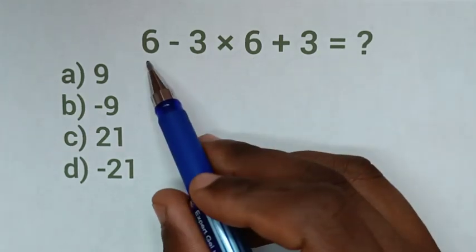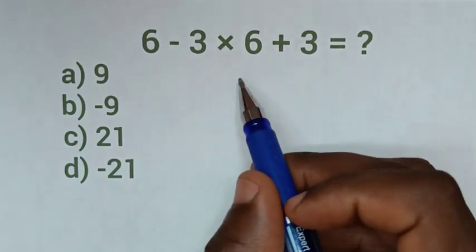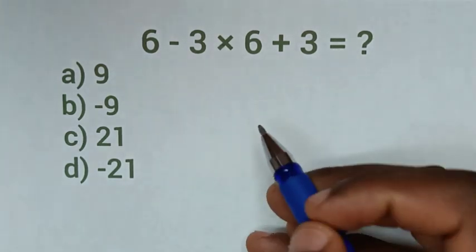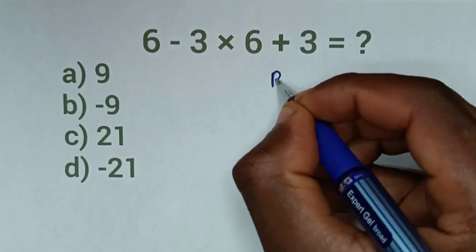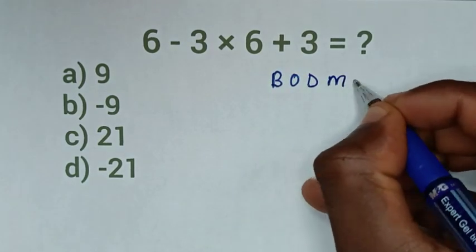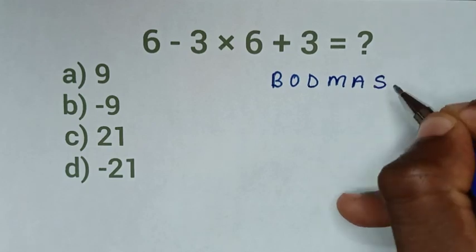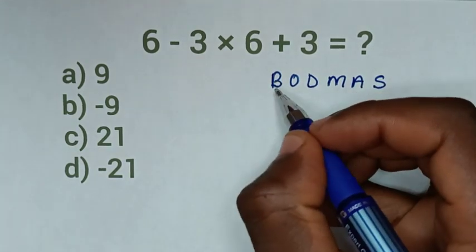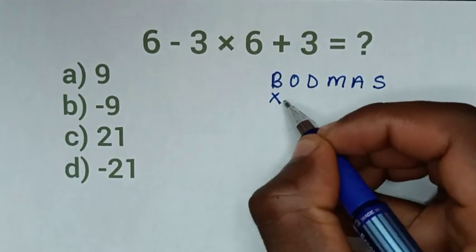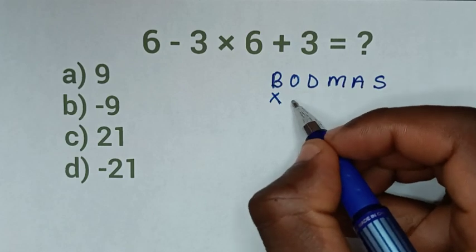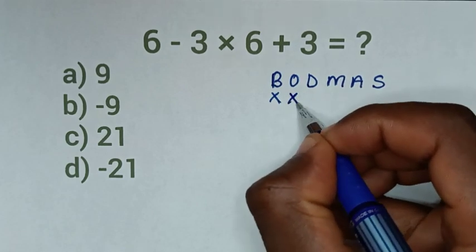So from this problem we'll solve it by using BODMAS rule. From BODMAS, B is bracket - we don't have bracket. O is order or exponent - we don't have order or exponent.